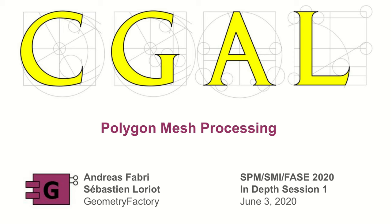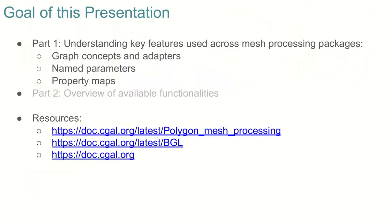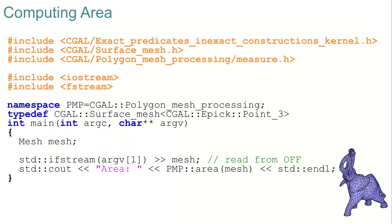Welcome to this in-depth session about polygon mesh processing in the Computational Geometry Algorithm Library. My name is Sébastien Loriaux. In this first part I'm going to walk you through the key notions to fully exploit the different packages in CGAL. In the second part I'll give a graphical overview of the algorithms for polygon mesh processing available in CGAL. Throughout this presentation I'll use a variation of a simple example: loading a triangle mesh from an OFF file and computing its area by calling the area function.